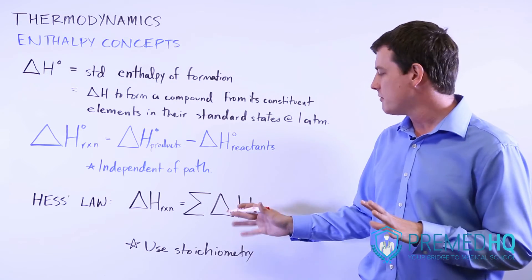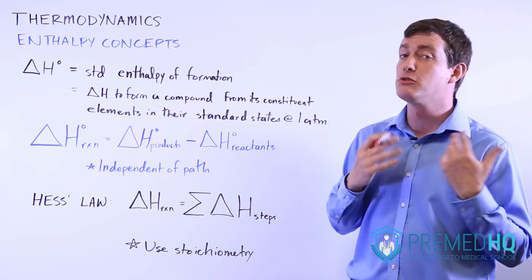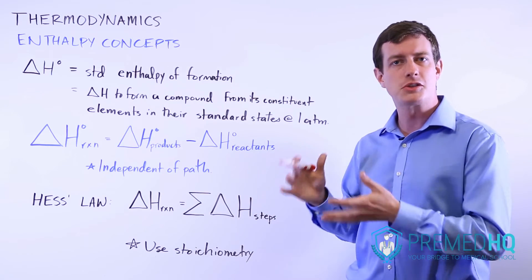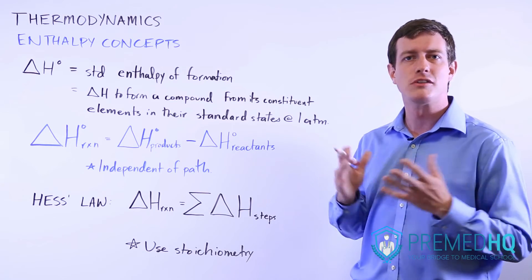You don't do any stoichiometric multiplication when you're looking at standard reduction potentials with electrolytic cells, for example, or any sort of electrochemical cell.